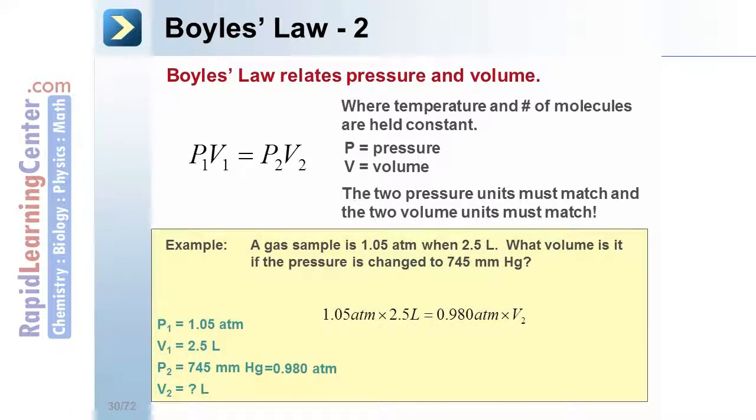This information can then be used in the Boyle's law equation, which can be rearranged through algebra to solve for the unknown variable. The answer is calculated to be 2.7 liters.